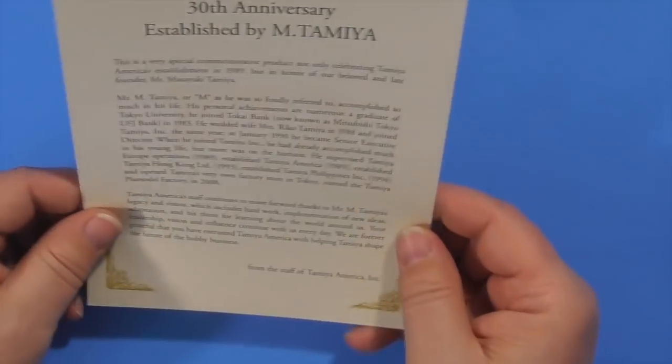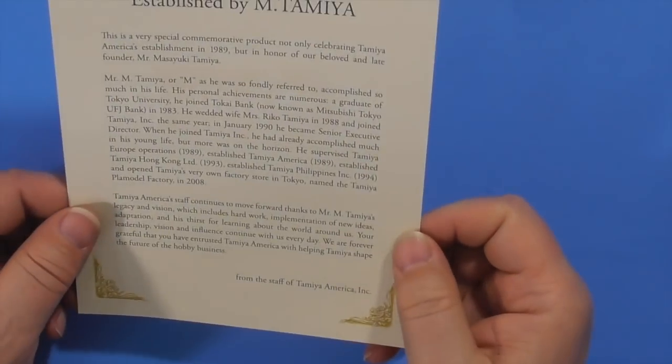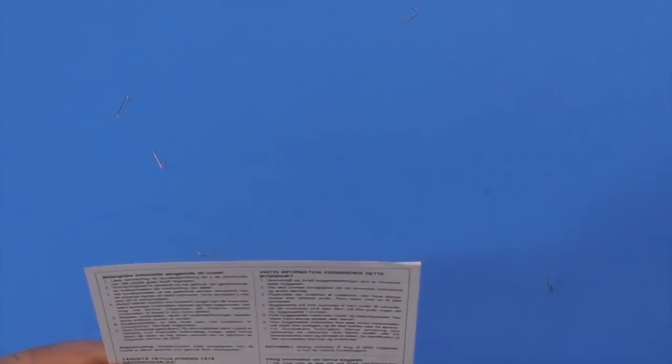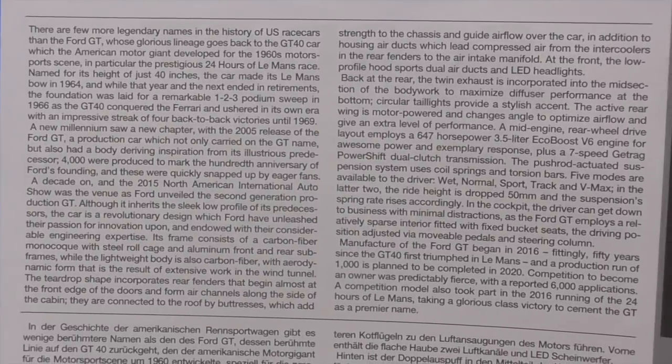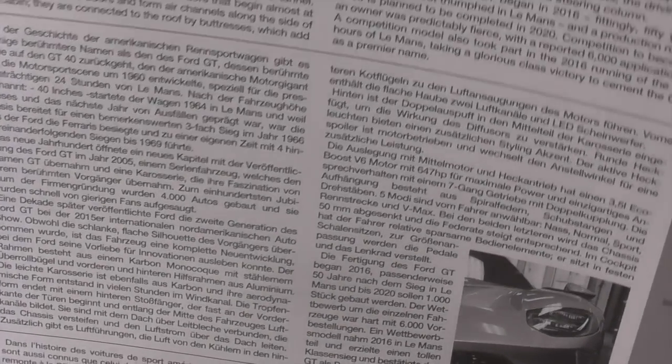So we've got a 30th anniversary commemorative letter talking about this product and commemorating the 30th anniversary of Tamiya. That's nice. And it's the 30th anniversary of Tamiya America, not Tamiya itself, before I start getting letters on that. Here's a little warning sheet. Yep, warnings in many languages. We've got a little bit about the car again in several languages. English, I'm thinking that's German, and French, probably, and of course Japanese.